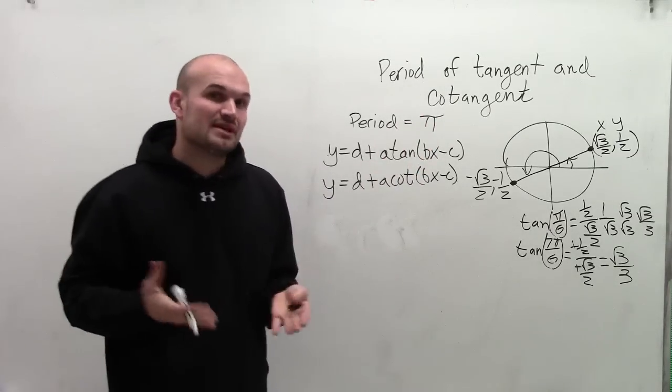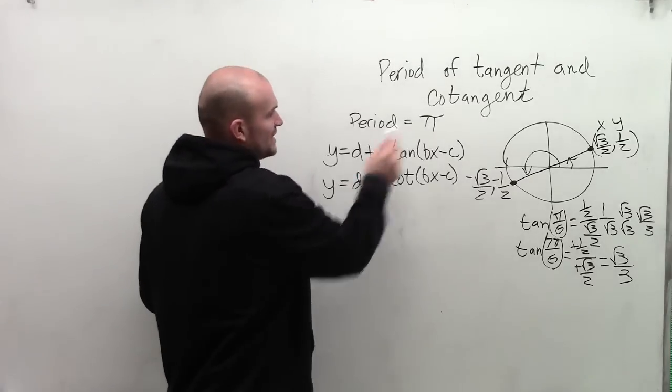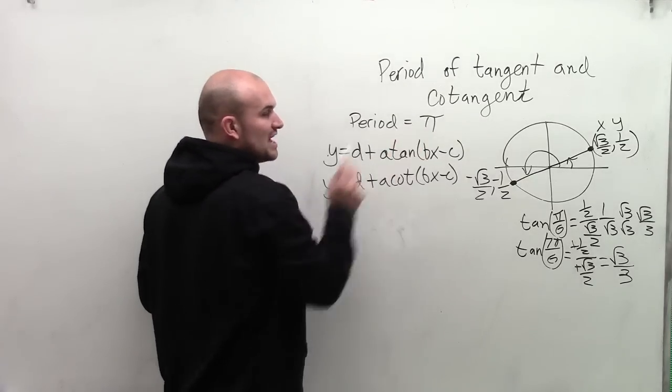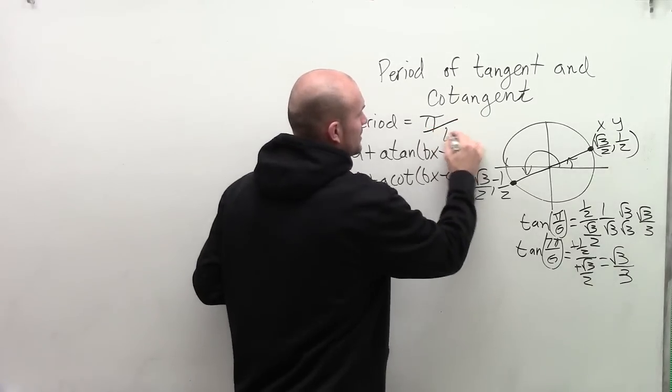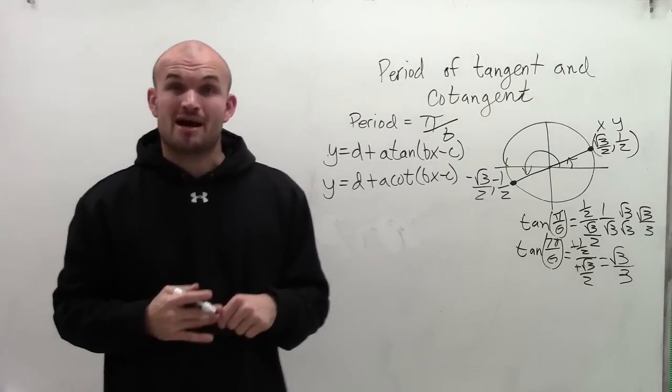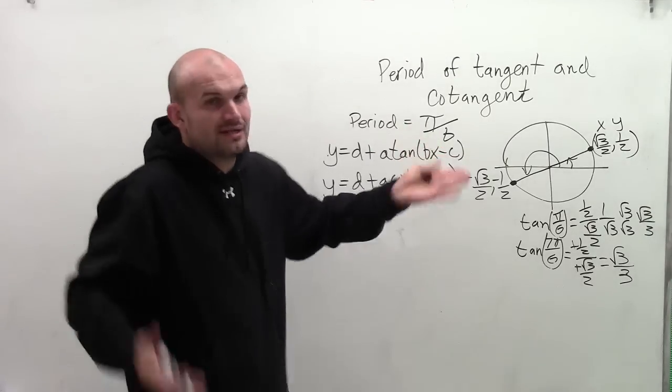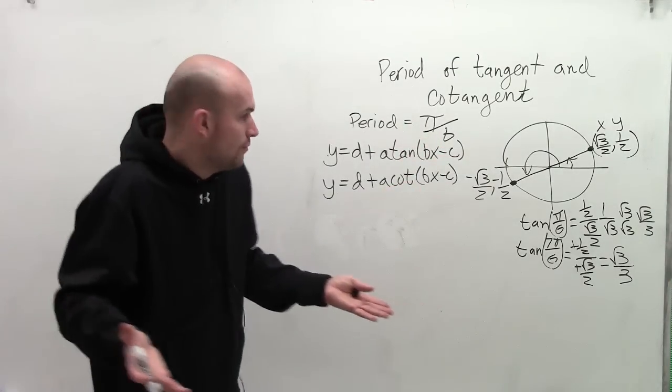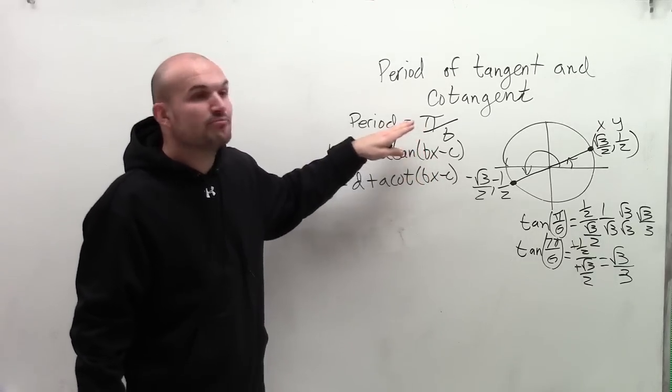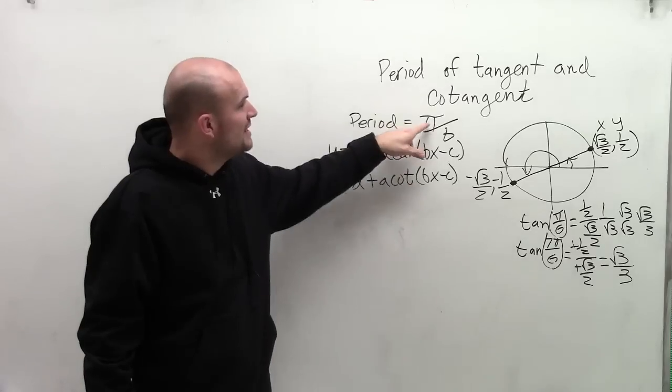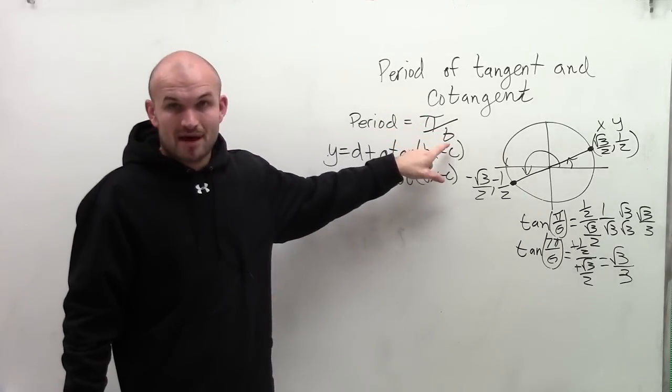That's going to be the exact same thing for tangent and cotangent. So when looking at the period, it's always the parent graph is pi. But if we have any type of transformations, we need to make sure we include them so it would be pi divided by b. Now, in the parent graph, b is 1, so therefore we know we have a period of pi. However, for any transformation where you have a value of b, you've got to make sure the period for tangent and cotangent is going to be pi divided by b.